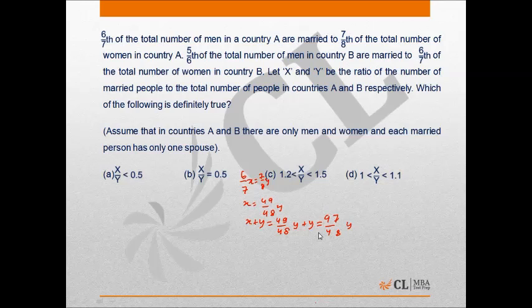It is given that let x and y be the ratio of the number of married people to the total number of people in country A and B respectively.